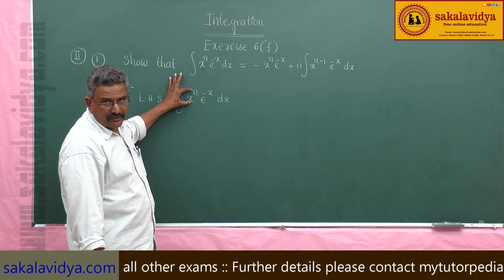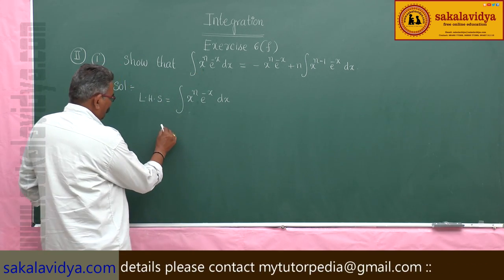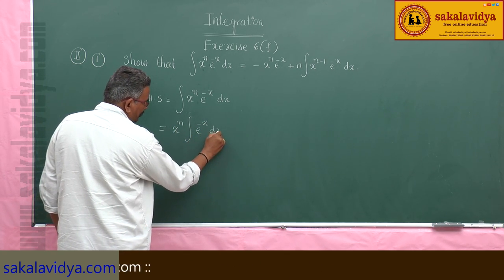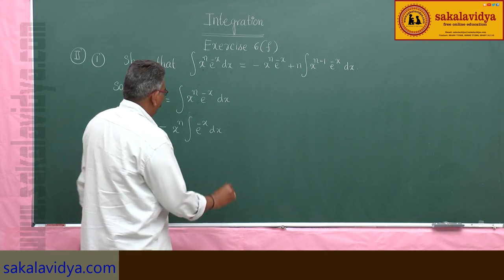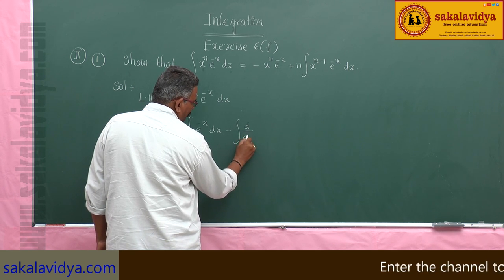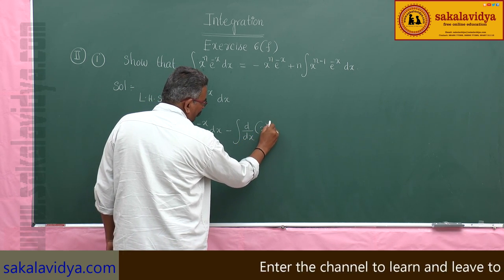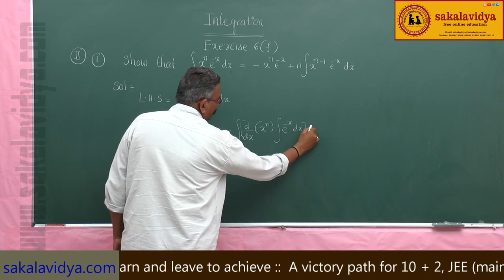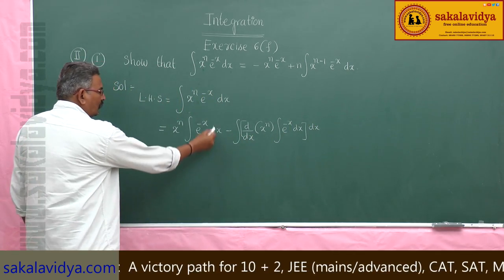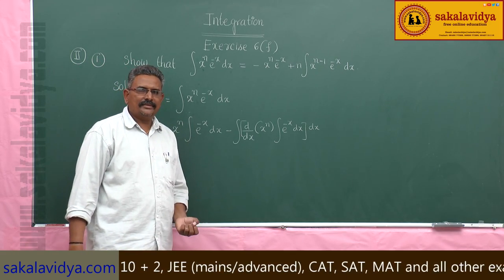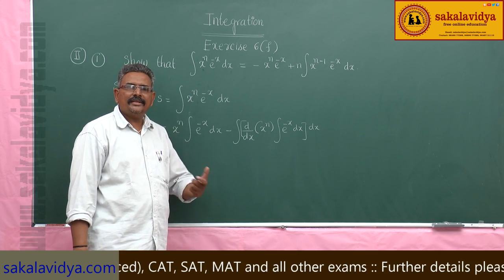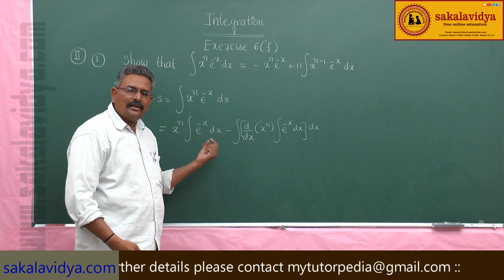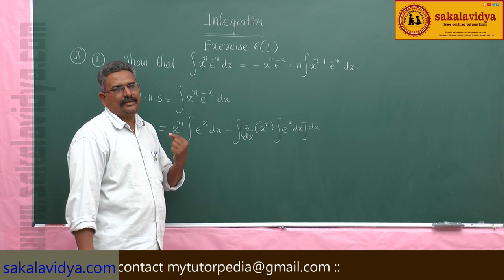So this becomes the first function and this becomes the second function. Applying integration by parts: first function x to the power of n, times the integral of the second function e to the power of minus x dx, minus the integral of d by dx of x to the power of n times the integral of e to the power of minus x dx, whole dx. The integral of e to the power of minus x dx is e to the power of minus x, but the derivative of minus x is minus 1, so the integral of e to the power of minus x is minus e to the power of minus x.